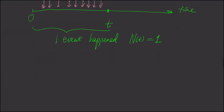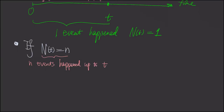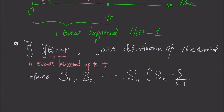Today we are asking a new question. If N(t) = n — meaning n events have happened up to time t — we are curious about the joint distribution of the arrival times S1, S2, up to Sn. Here Sn, for any n, is an arrival time, not an inter-arrival time. The arrival time is the sum of inter-arrival times.